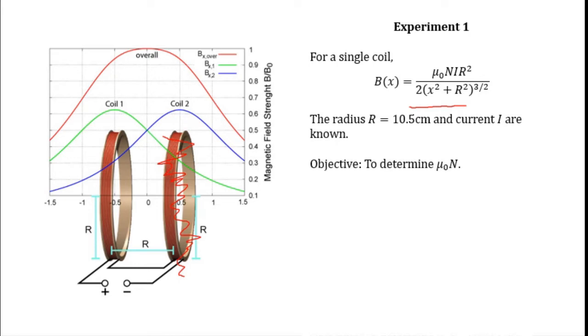So to determine the value of μ₀N, what you need to do is place the magnetic field strength detector at the center of the coil, which is over here, and that is equivalent to x equals zero.